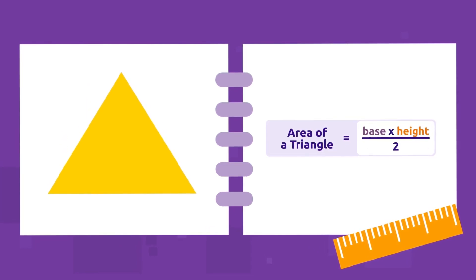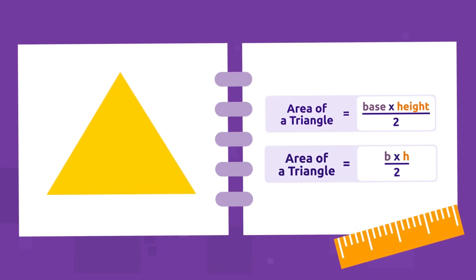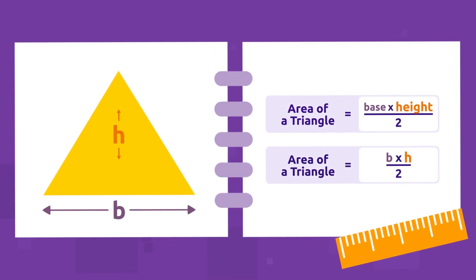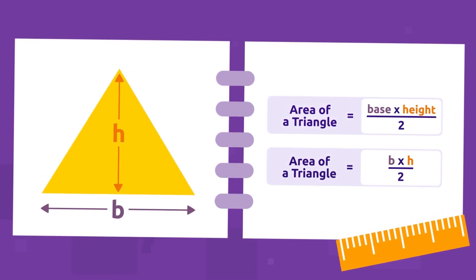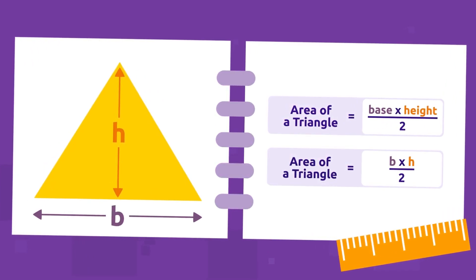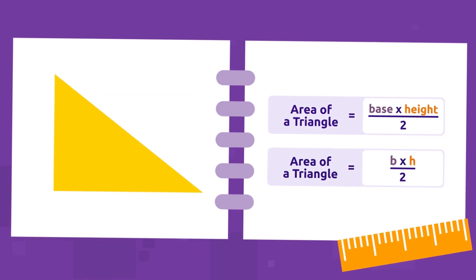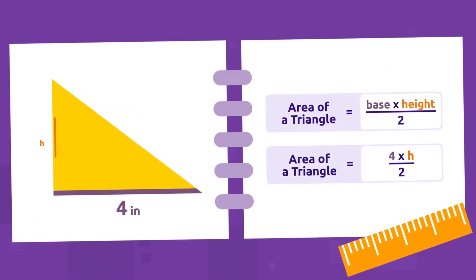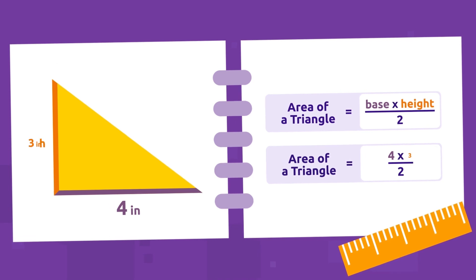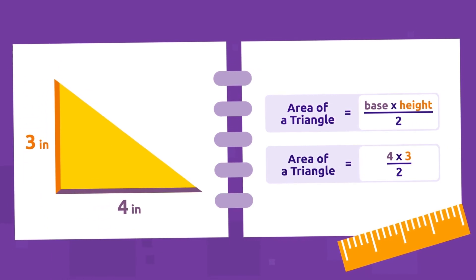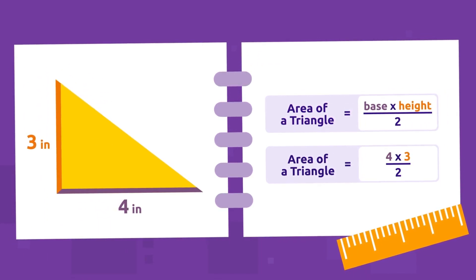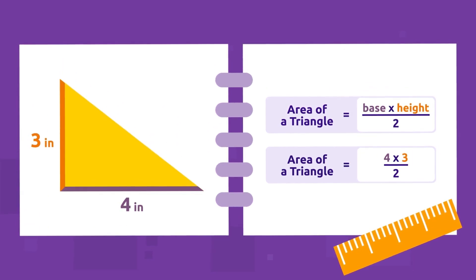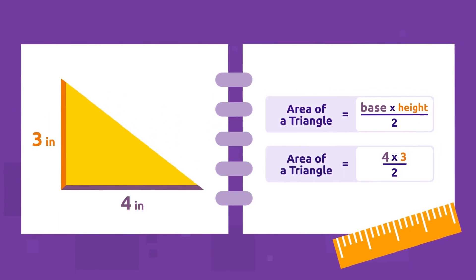To calculate the area of a triangle, we use the following formula: the area of a triangle is equal to the base times the height, divided by two. Let's practice with a right triangle. The base of this triangle measures four inches and its height measures three inches. What will its area be?